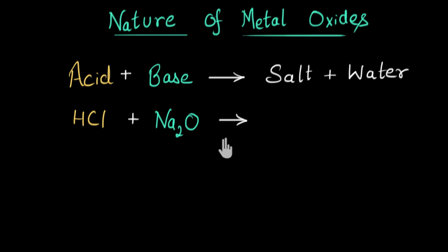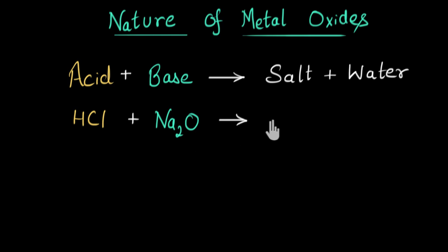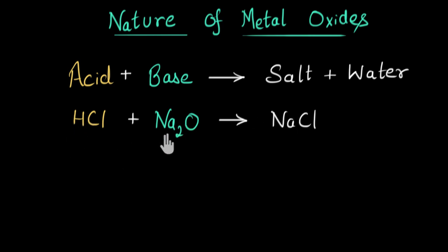Here there will be a double displacement reaction. The ions will exchange positions — sodium will get attracted to chlorine and finally form sodium chloride, NaCl, which is a salt. And hydrogen will get attracted to oxygen and we'll get water, H₂O.